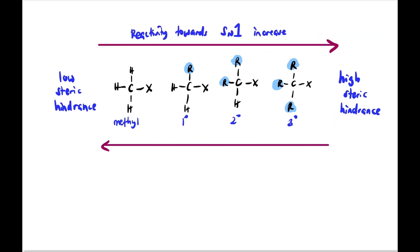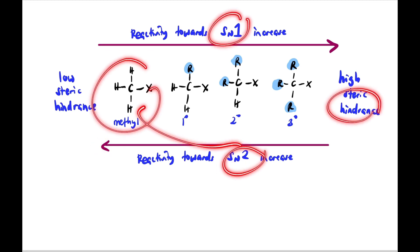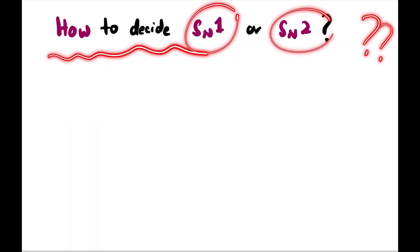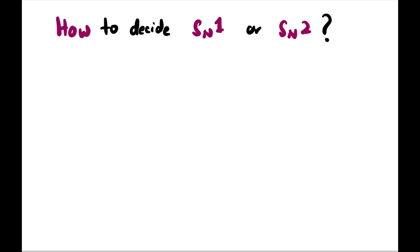The more to the right, it will increasingly favor SN1, because high steric hindrance favors SN1. The more to the left, it will favor SN2 because there's less steric hindrance. By the way, how do we decide whether a reaction is SN1 or SN2 mechanism?